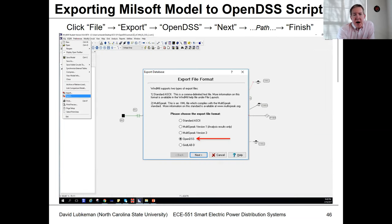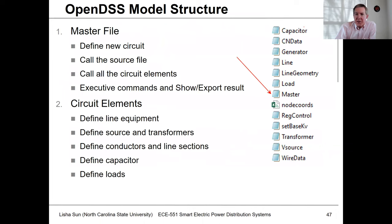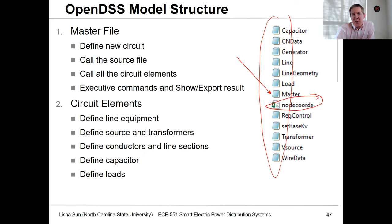Go to File, Export, select the OpenDSS option, hit Next, it'll ask you for a path name for the file, then hit Finish. What this does is it creates a number of text files as well as a CSV file that has the node coordinates in it. The node coordinates are used for doing different types of maps and plots of the circuit topology.